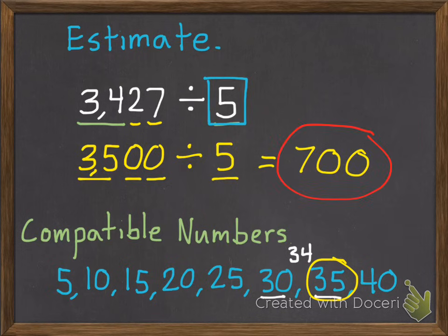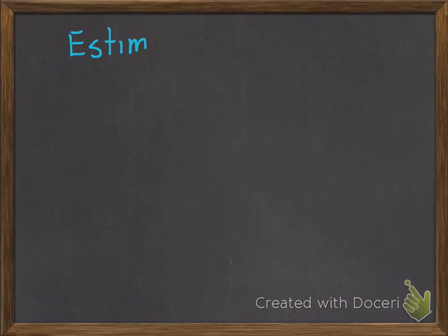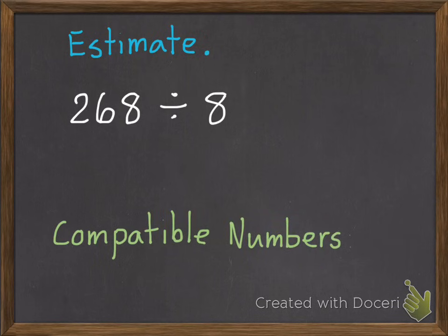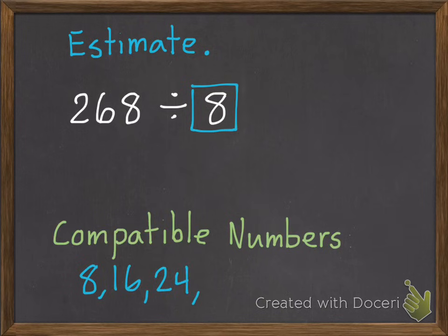Here's my second example. Same thing. I'm going to estimate 268 divided by 8. We are going to use compatible numbers. The compatible numbers for 8 are 8, 16, 24, 32, 40. That's all we need.